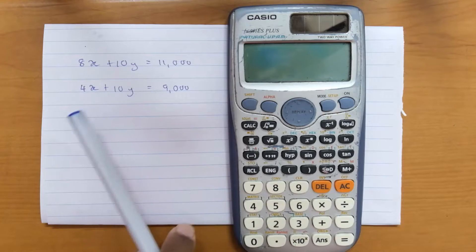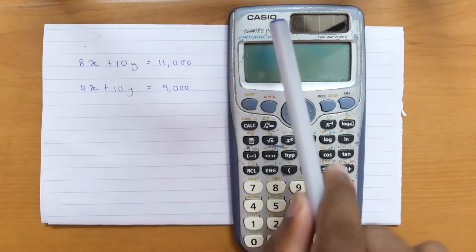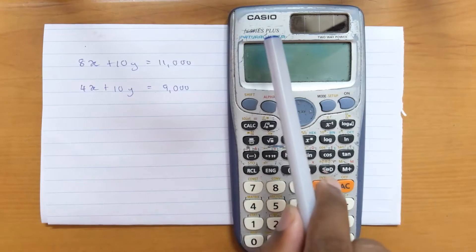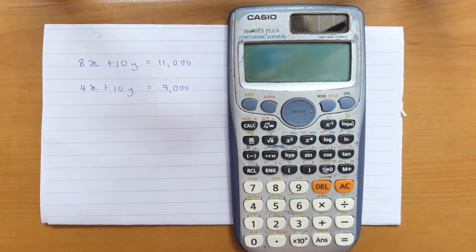Now let's see how to do a two-variable linear equation calculation using the Casio 991 ES plus calculator. First, you have to turn on the calculator, then you have to clear the memory.